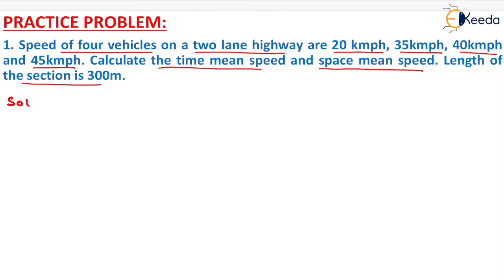First of all, we have to calculate the time mean speed, which is given as Vt. It will be the sum of all the speeds—20 plus 35 plus 40 plus 45—and we have to divide it by the number of speeds, that is 4.